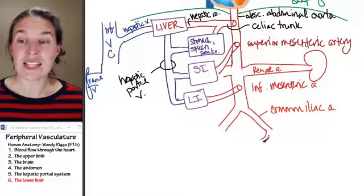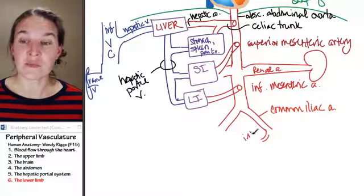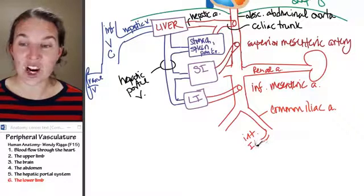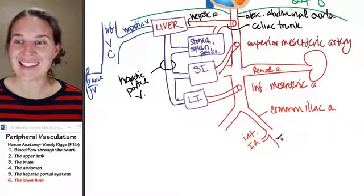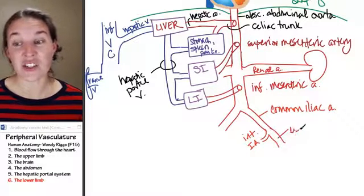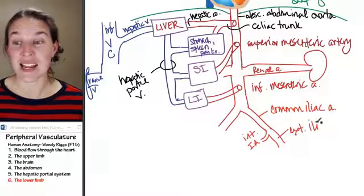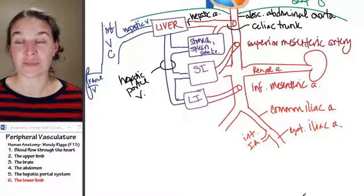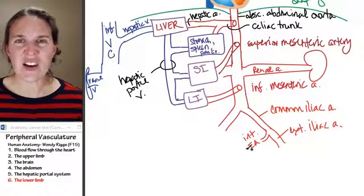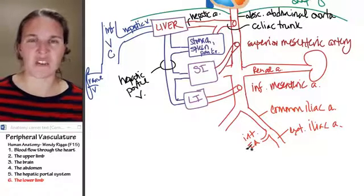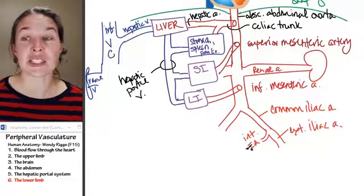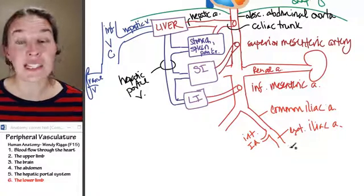There is an internal iliac artery and an external iliac artery. The internal iliac artery feeds pelvic structures. It doesn't actually leave the abdomen. The external iliac artery does.